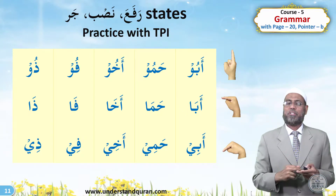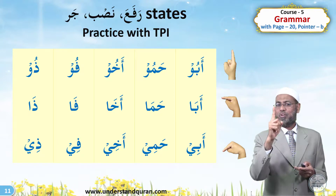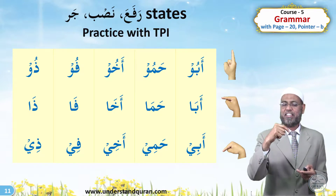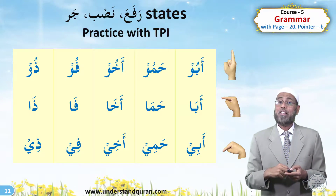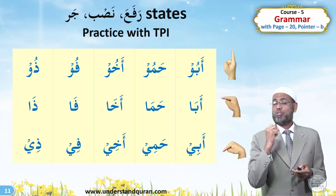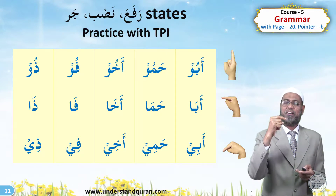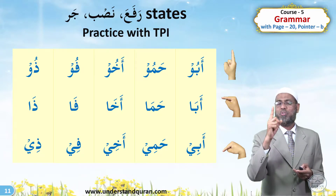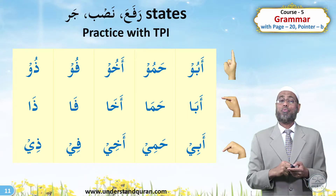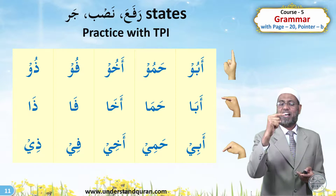Repeat after me: Akhu, Akha, Akhi. Then Fu, Fa, Fi — that is mouth in original, Nasab, and Jar states. And the last one: Dhu, Dha, Dhi — meaning owner.